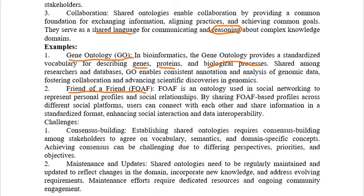The second example is Friend of a Friend, abbreviated FOAF. This is an ontology used in social networks to represent a person's profile and social relationships. You can see this in platforms like Instagram, Facebook, and Snapchat, where we communicate with unknown people by viewing their personal profiles — for example, viewing someone's Instagram profile and establishing a social relationship.